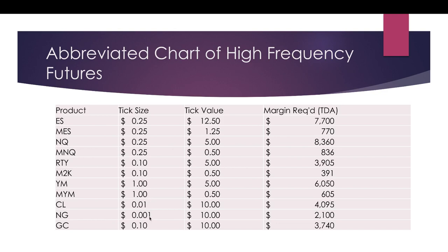Nat gas, for example: a 0.001 tick yields $10, and the margin for TD Ameritrade as an example is $2,100 — but verify this on your own. Tick size and tick value stay the same regardless of broker. As you can see, nat gas is quite powerful. A $1 move on nat gas, which would be a massive move, would be $10,000.